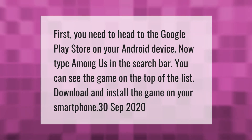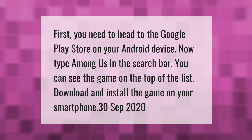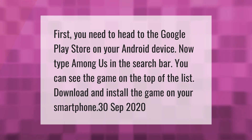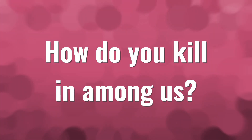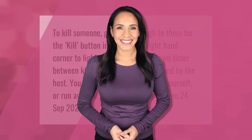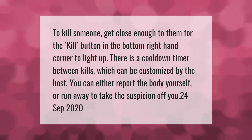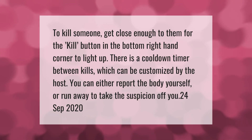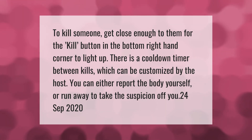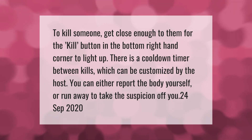To kill someone, get close enough to them for the kill button in the bottom right-hand corner to light up. There is a cooldown timer between kills, which can be customized by the host. You can either report the body yourself or run away to take the suspicion off you.